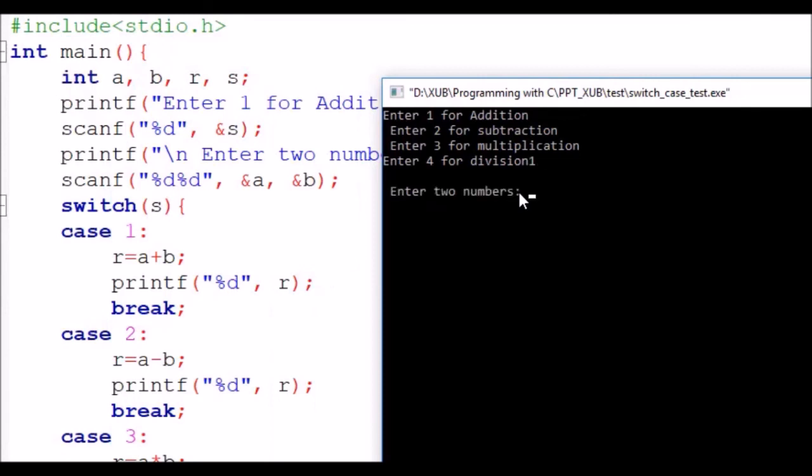So I am entering 1, enter 2 numbers, 8 and 9. See, result is coming, 17. So it is working. Addition of 8 plus 9 is 17.